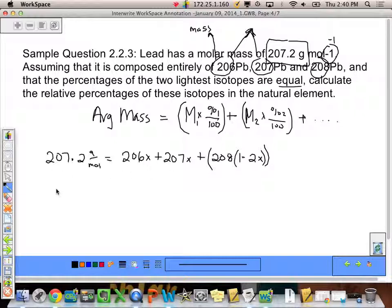Then I can start multiplying through and adding things and subtracting things. I get 207.2 is equal to 413X, that comes from the 206 plus the 207, plus, I want to do some PEMDAS. I'm going to multiply this through. I get 208 minus 416X. Then I'm going to rearrange all of this. I find that X is equal to 0.27, or 27%.